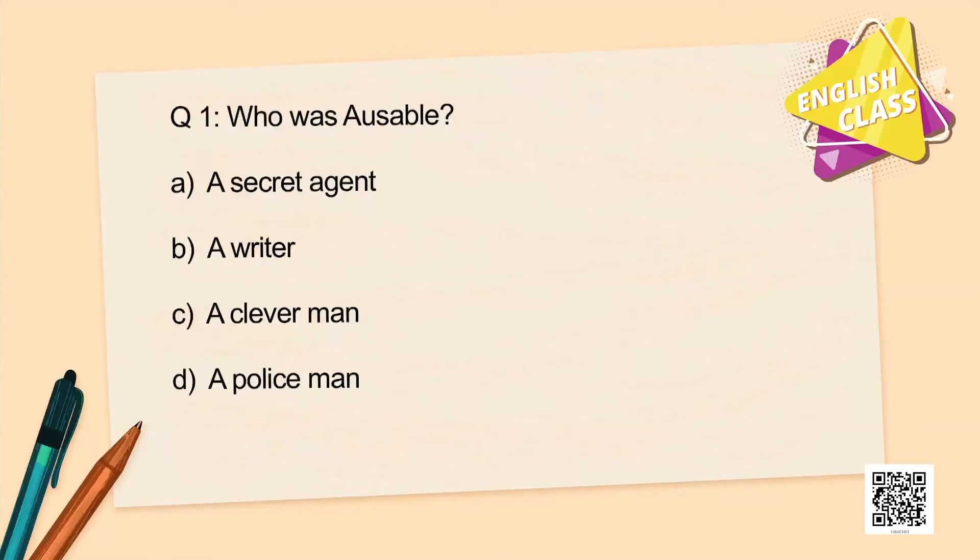I hope you have understood something from the chapter and the summary. Let us now check how much you understood. I will ask some comprehension questions in multiple choice format. Multiple choice questions carry one mark each in exams, but the choices can be tricky — pay attention to what you are marking. Question number one: Who was Ausable? A secret agent? A writer? A clever man? Or a policeman?